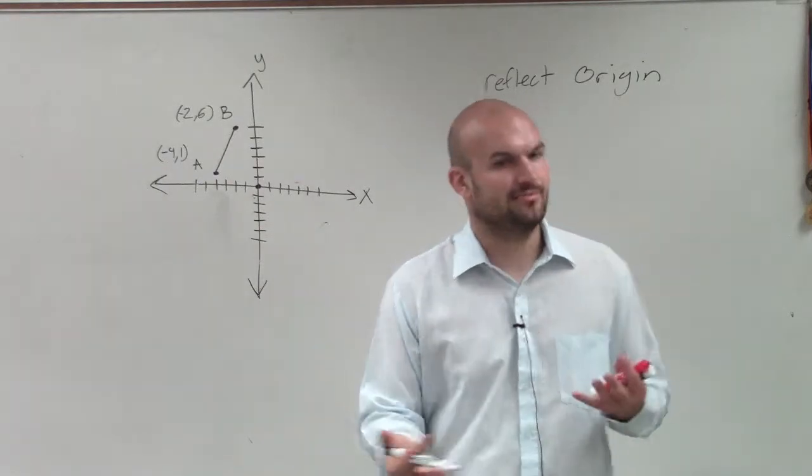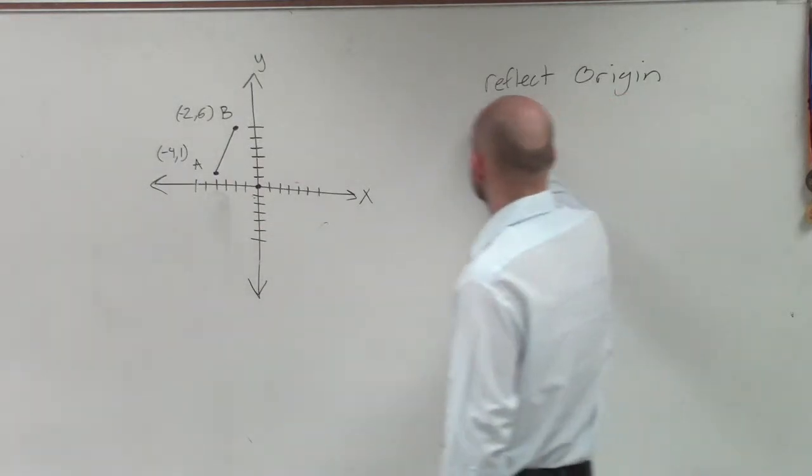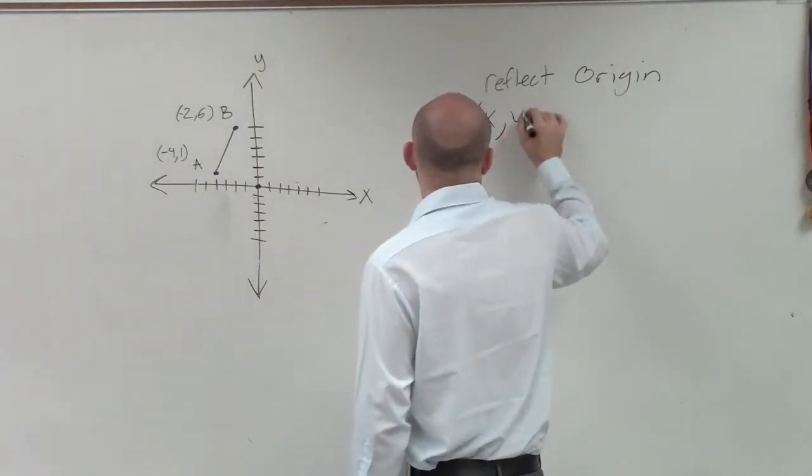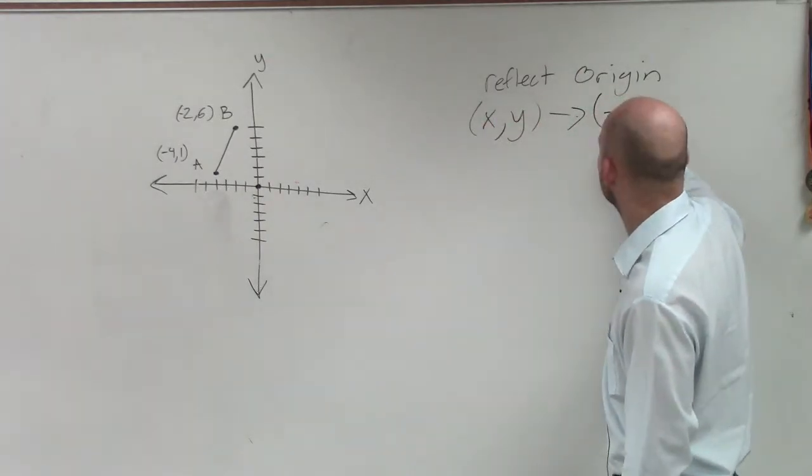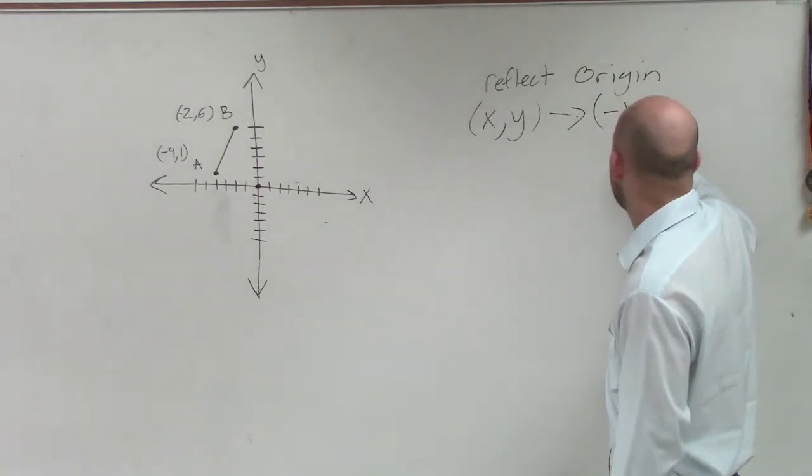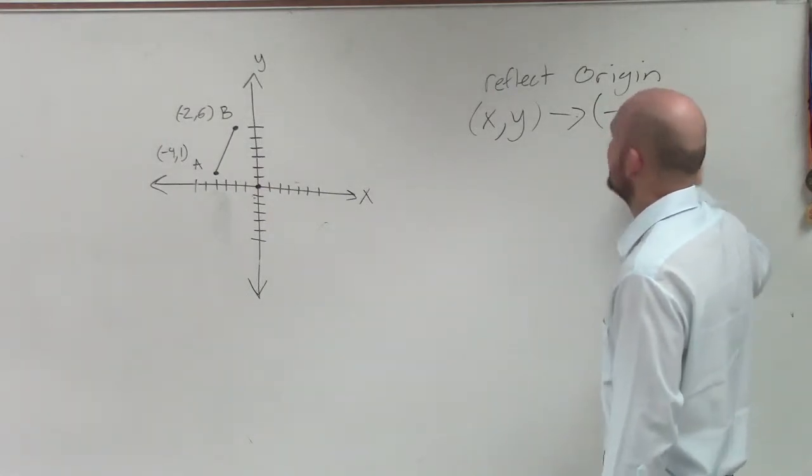Well, let's go and look at the points. I think I'll make it a lot simpler for you guys to understand. If I have a coordinate point and I want to reflect about the origin, what that essentially is doing is reflecting over the y-axis and reflecting over the x-axis.